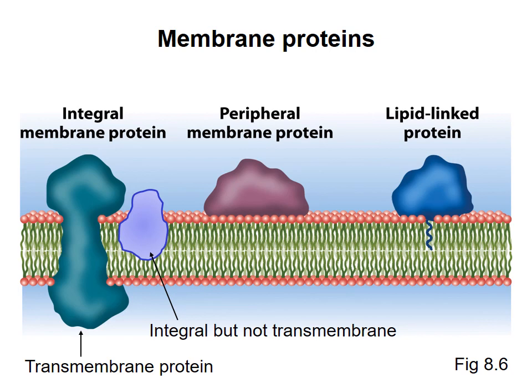Peripheral membrane proteins are not embedded in the bilayer, but associate with the hydrophilic head groups of lipids or with integral membrane proteins. The polypeptide chain of peripheral membrane proteins does not contact the hydrophobic interior of the membrane. Lipid-linked membrane proteins have a covalently attached lipid molecule that is embedded in the bilayer. The polypeptide chain itself may or may not enter the interior of the membrane. In the example shown here, the polypeptide chain is not exposed to the hydrophobic part of the membrane.